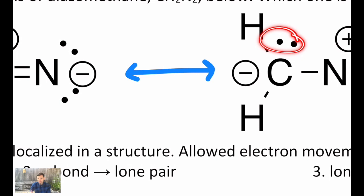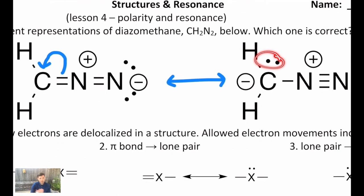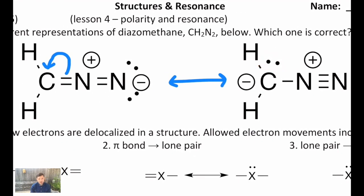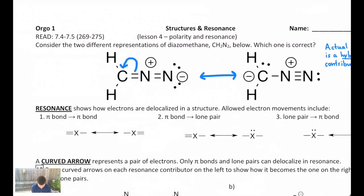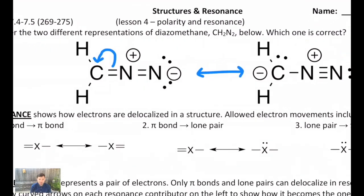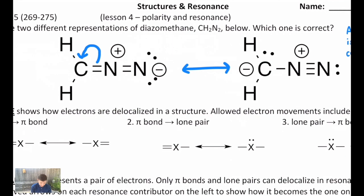So we use this to show how one contributor sort of becomes another, but remember, the true structure is actually a hybrid of both as one thing. The electrons are just delocalized and spread around — it's not that it's wavering back and forth between these two. That's not the only curved arrow I would use for this contributor, though. There's another change.